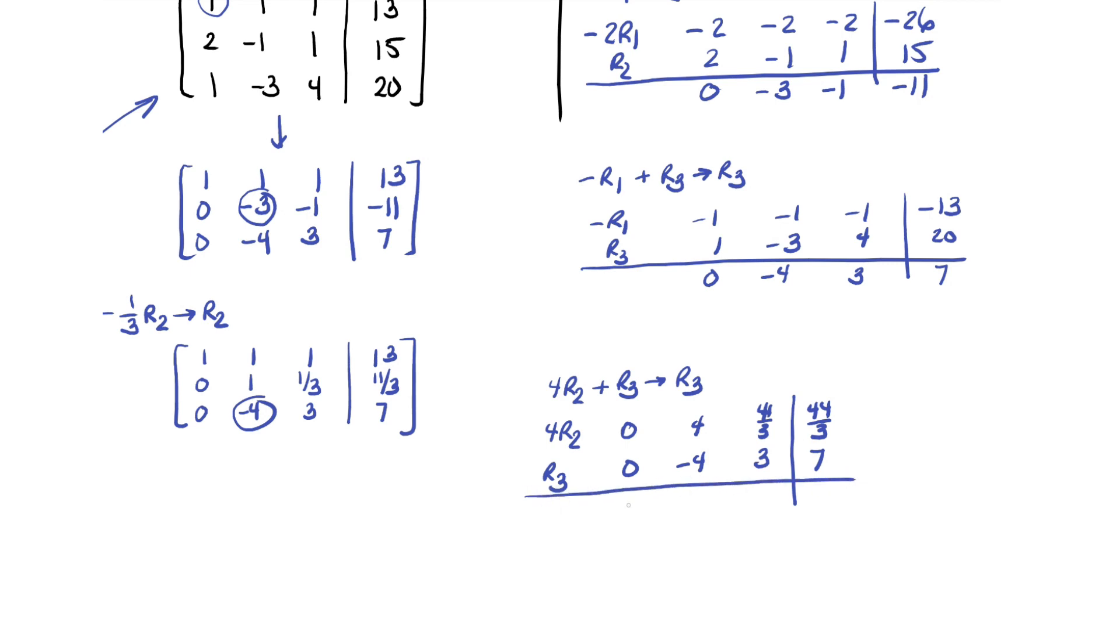Let's see what happens when we add them up. So you have 0, 0. Now 4 thirds plus 3 is 4 thirds plus 9 thirds, so that's 13 thirds. 44 thirds plus 7 is 44 thirds plus 21 thirds. So 44 and 21 is 65, so that's 65 thirds. That looks promising. I know 13 goes into 65.